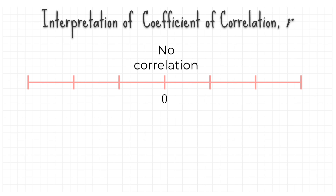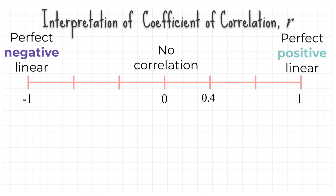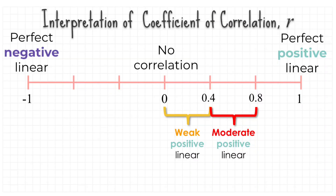If r equals 0, this indicates x and y have no correlation. If r equals 1, this indicates x and y have a perfect positive linear correlation. If r is between 0 and 0.4, this indicates x and y have a weak positive linear correlation. If r is between 0.4 and 0.8, this indicates x and y have a moderate positive linear correlation.